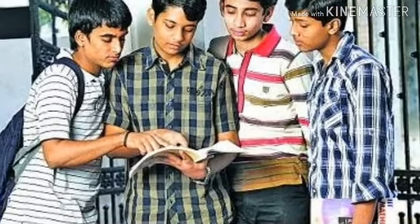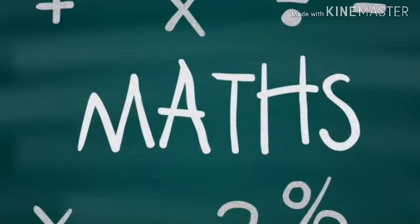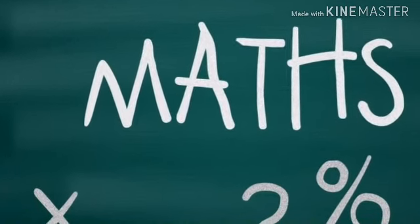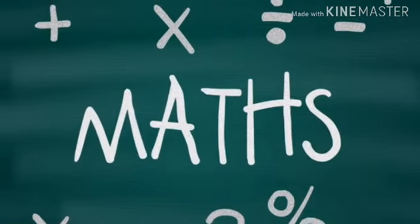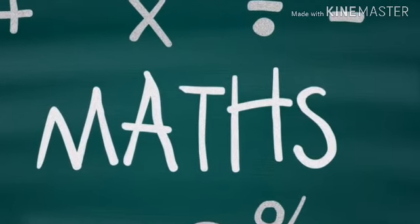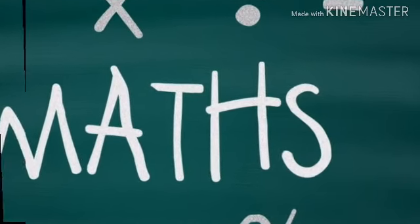22nd Question: If y equal to x into root of a square plus x square plus a square log of x plus root of x square plus a square, then show that y dash equal to 2 into root of a square plus x square.